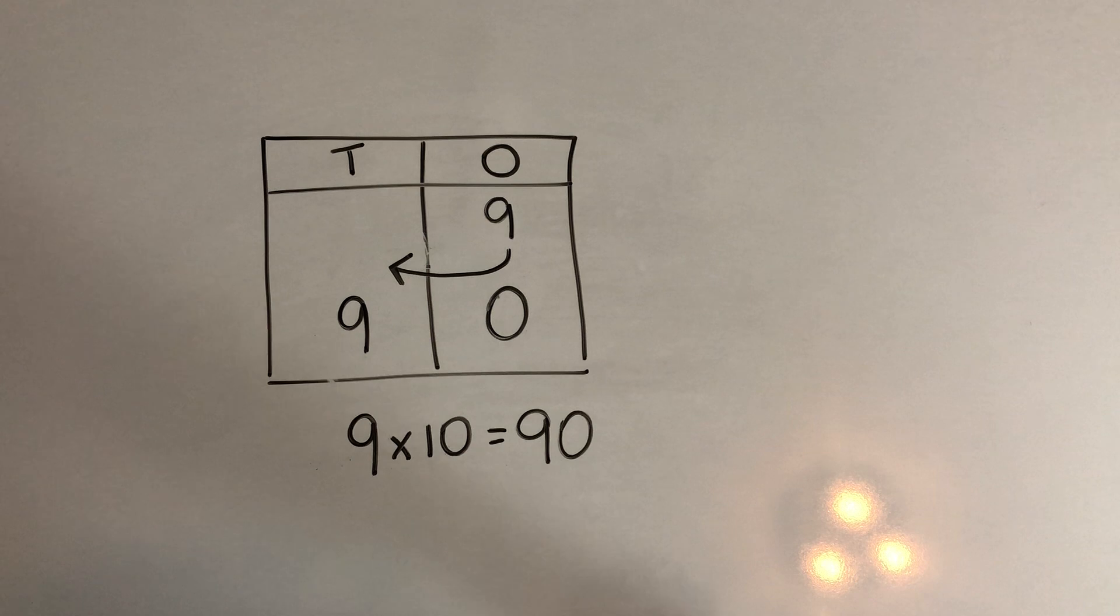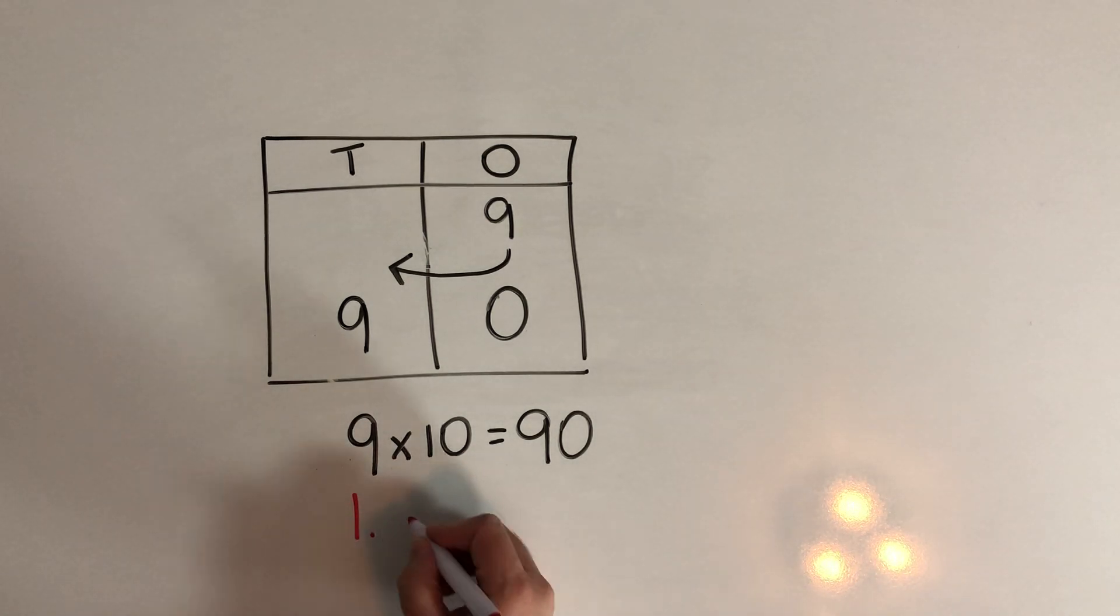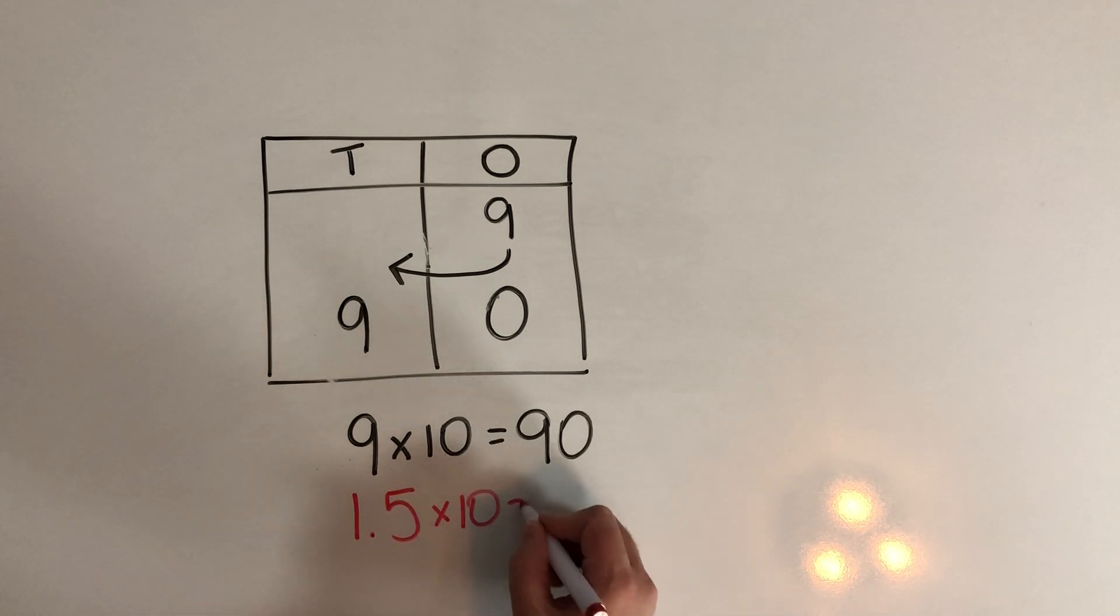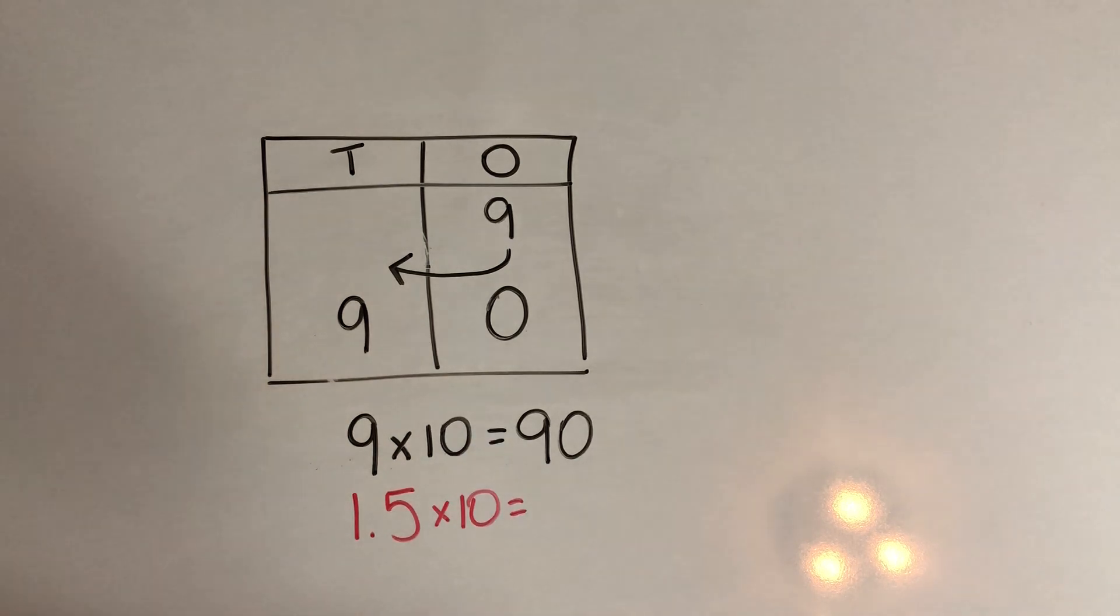However, I just want you to be careful because once you get into older grades and you start multiplying decimals times 10, this just add a 0 no longer works. And if you haven't learned decimals yet, don't worry too much about this part. But if you have, you might find this explanation a bit interesting.